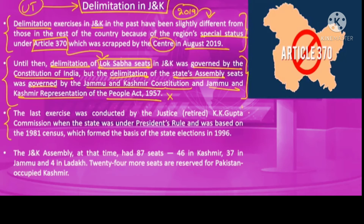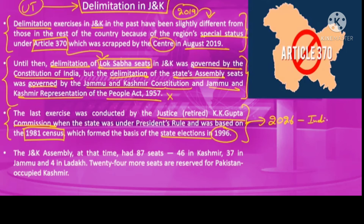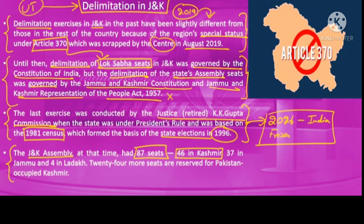In J&K, the last delimitation exercise was carried out in the 1990s by the Justice K.K. Gupta Commission based on 1981 census data, which became the basis for state elections in 1996. Following this, J&K had frozen delimitation until 2026, in line with the rest of the country. As per the earlier delimitation, J&K assembly had 87 seats — 46 for Kashmir, 37 for Jammu, and 4 for Ladakh — plus 24 seats allocated to Pakistan-occupied Kashmir.